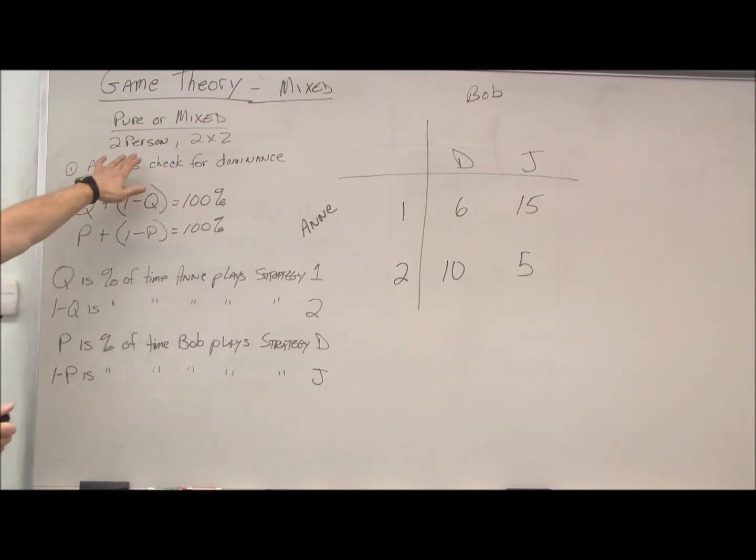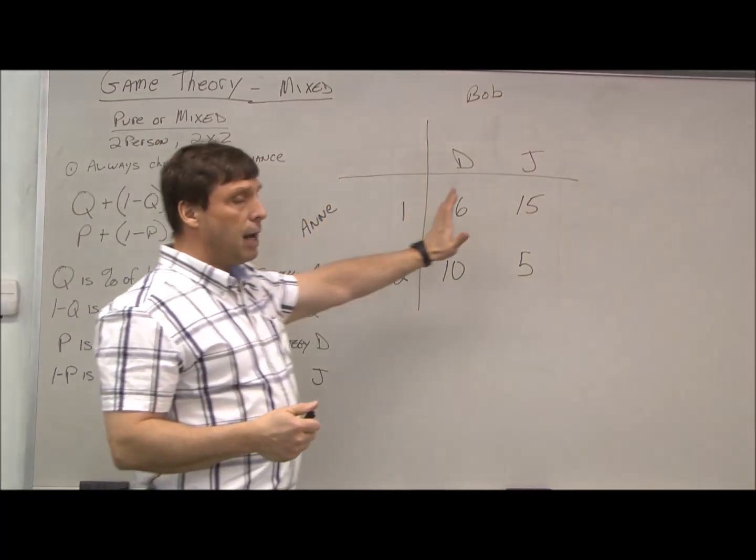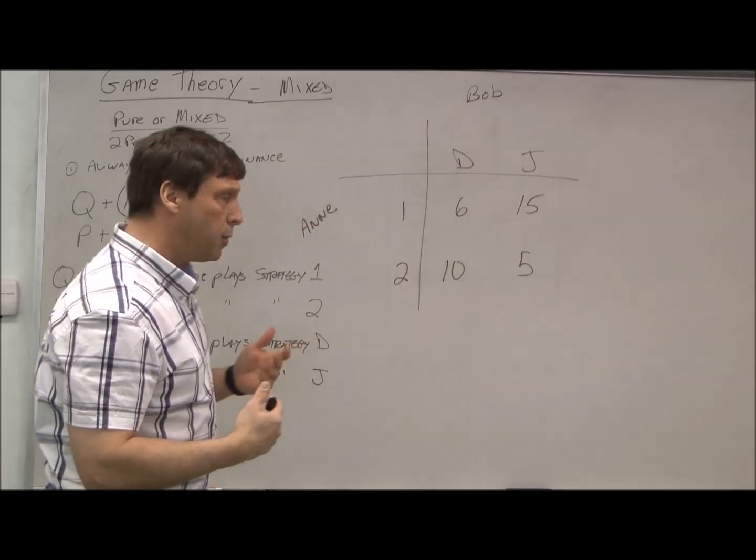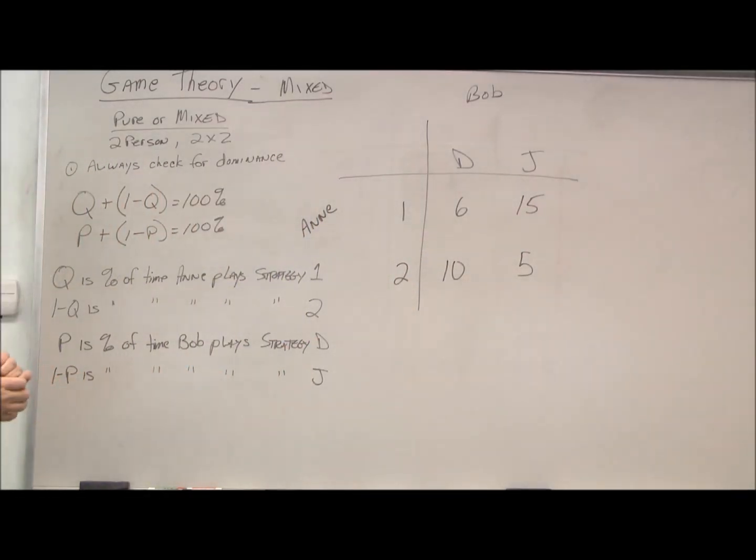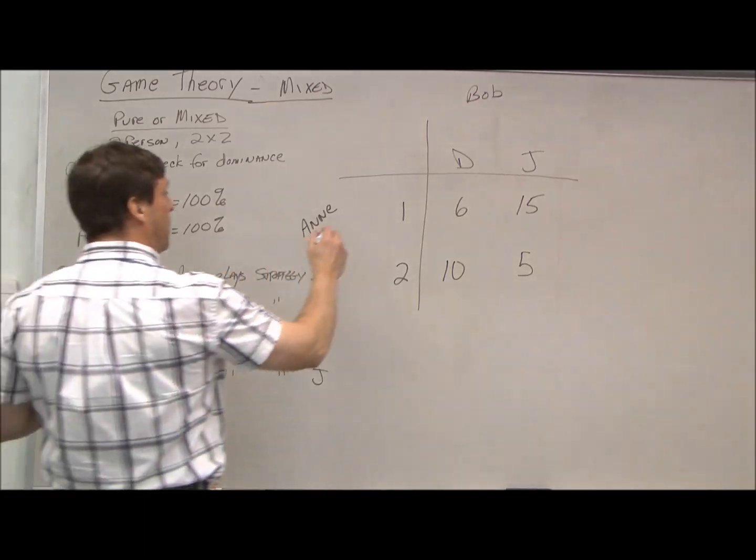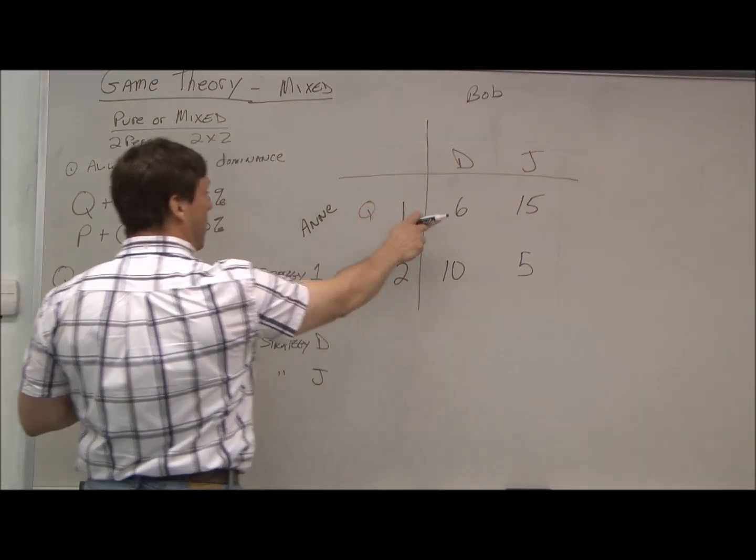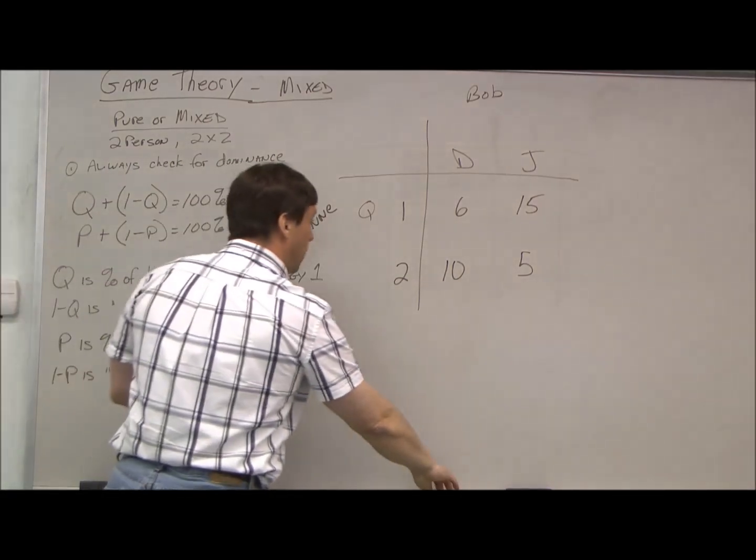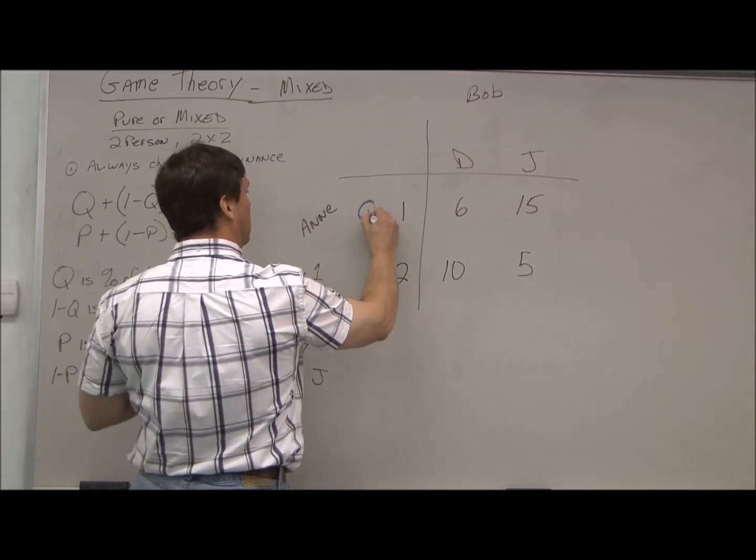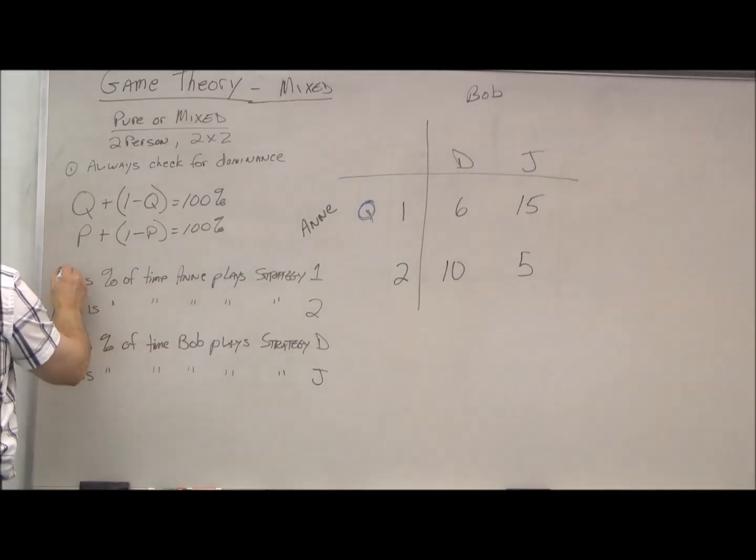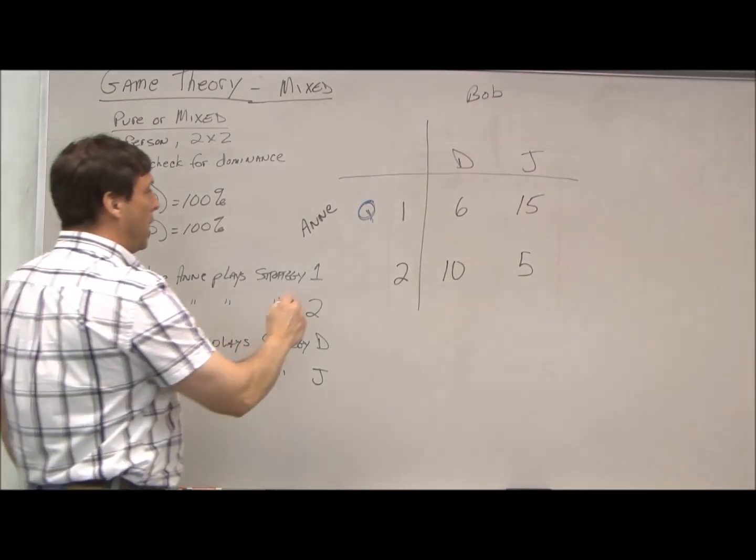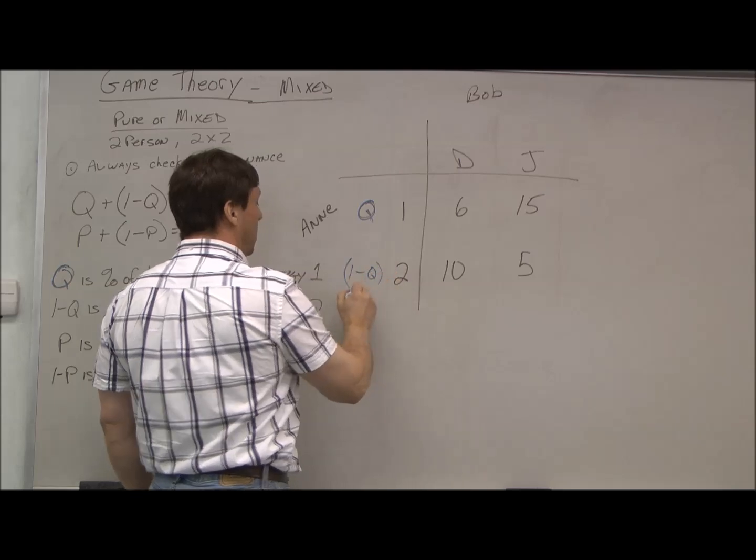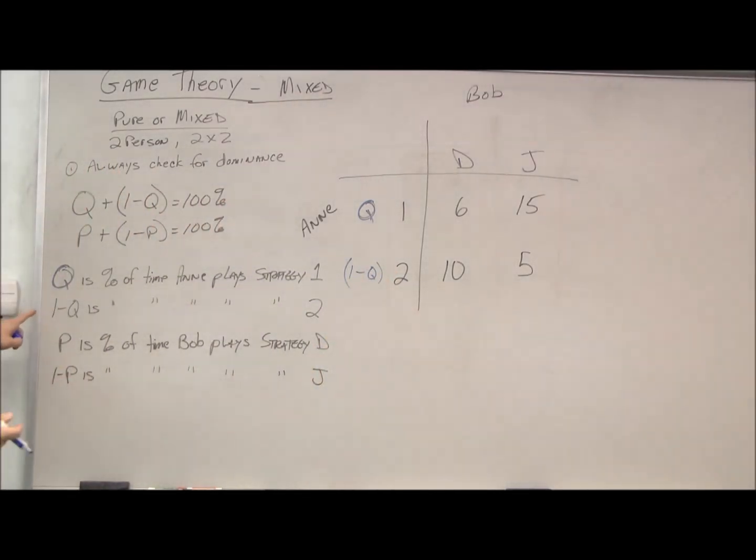We're going to keep it simple and look at a two-person, two-by-two game, so each player has two choices. We're going to introduce some new variables, p and q. Q is the amount of time that Annie will play strategy one. Here, I'll put that in blue.